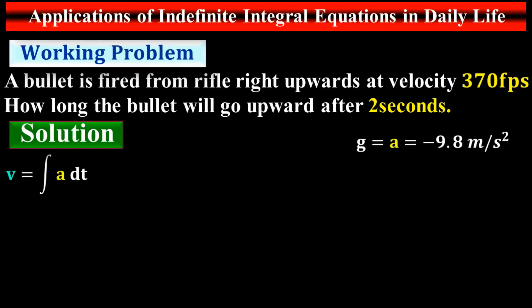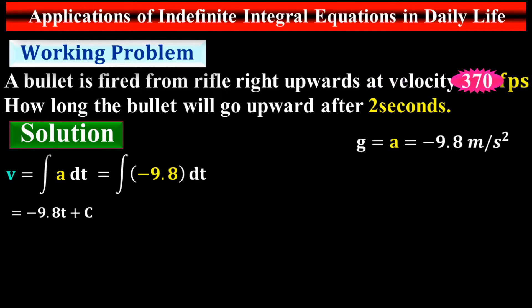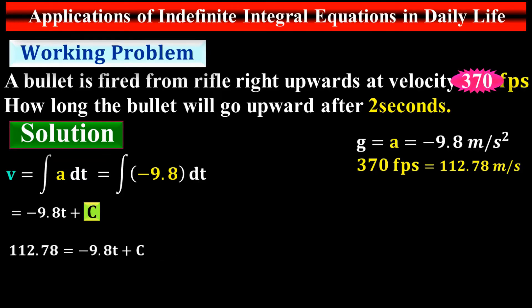Solution: velocity equals the integral of acceleration, where acceleration is −9.8 m/s² (negative because the bullet travels opposite to gravity). Converting 370 feet per second gives 112.78 meters per second. Substituting a = −9.8, the integral gives v = −9.8t + C. At t = 0, the initial velocity is 112.78, so C = 112.78.